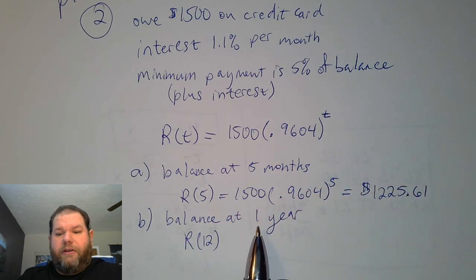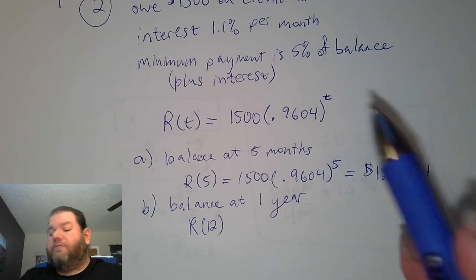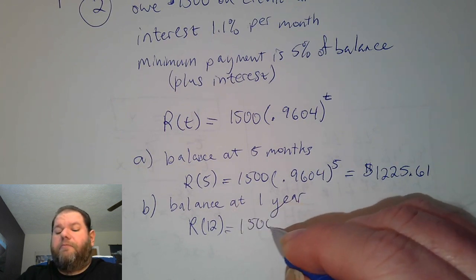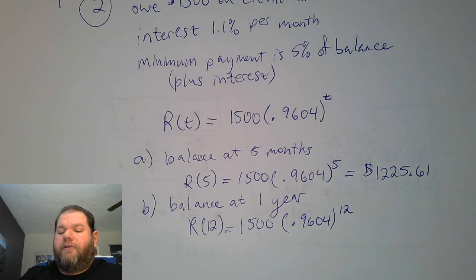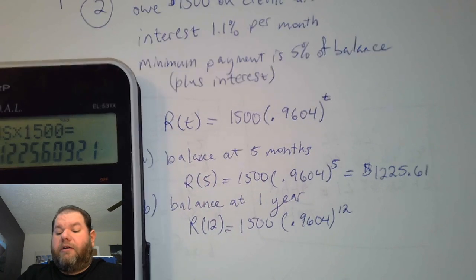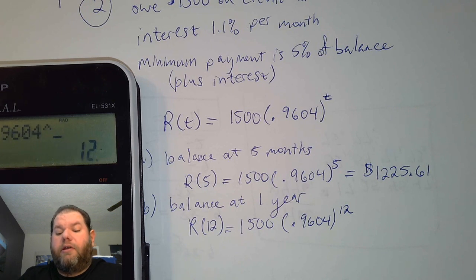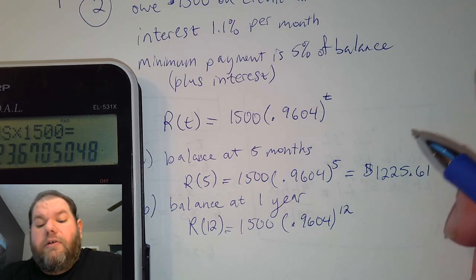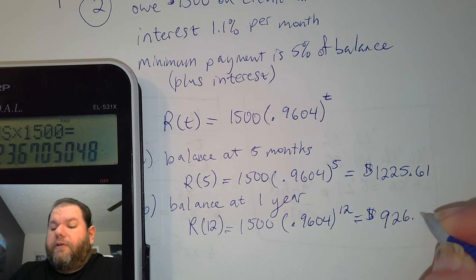Anyway. In this case, when we say the balance at one year. Remember that T is measured by months, so we would have to convert that to 12 months when we plug that into the formula. So I raise that to the 12th, and then multiply by 1,500. So 0.9604 to the 12th. Equals, and then times 1,500. So we're down to, after 12 months, $923.67.